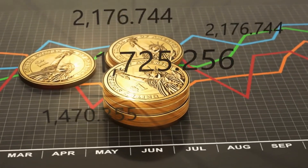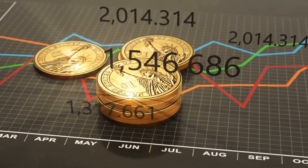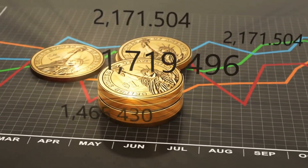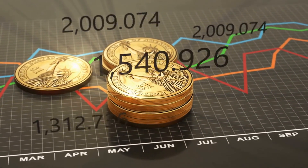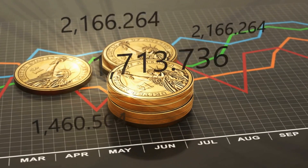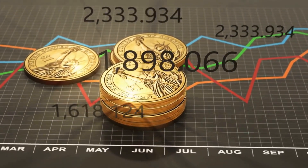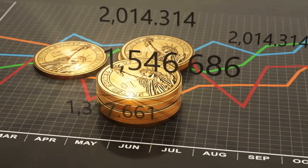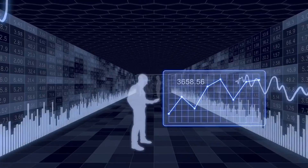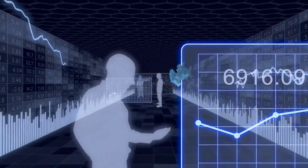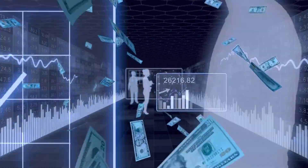End of Bretton Woods: In 1971, President Richard Nixon announced that the U.S. would no longer exchange dollars for gold at a fixed rate. This effectively ended the Bretton Woods system and allowed the value of the dollar to float freely on the foreign exchange market.